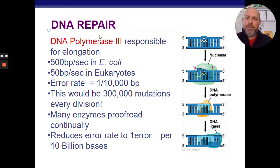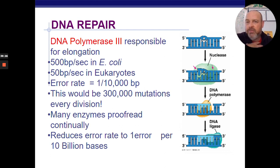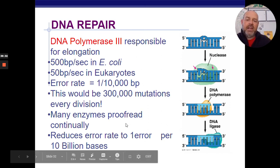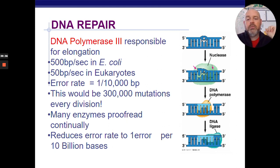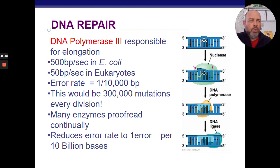DNA polymerase 3 is responsible for elongation — adding the bases at 500 base pairs per second in E. coli and about 50 base pairs per second in eukaryotes. Going that fast, an error occurs only once every 10,000 base pairs. However, that would still mean 300,000 mutations in a genome of 3 billion base pairs. So proofreading enzymes correct errors — when the wrong base is inserted, enzymes fix it — reducing the error rate to one in every 10 billion. That's incredibly accurate, like typing billions of keystrokes with almost no mistakes.